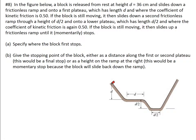Now let's do number 8. In the figure below, a block is released from rest at height d equal to 36 centimeters, and slides down a frictionless ramp onto a first plateau of length d. On the plateau the coefficient of kinetic friction is 0.5 — so there's friction on the plateau but not on the ramp. If still moving, it slides down a second frictionless ramp through height d over 2 onto a lower plateau of length d over 2, also with coefficient of friction 0.5.